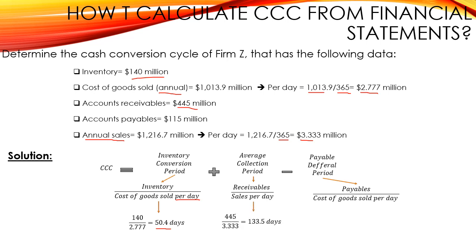Regarding the average collection period, it is the amount of accounts receivables — $445 million — divided by the sales per day, $3.333 million. So it is equal to 133.5 days. The company gives its customers 133.5 days to pay for their purchases.